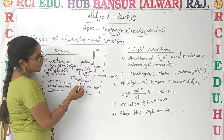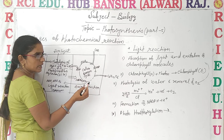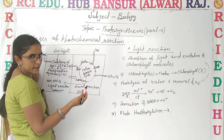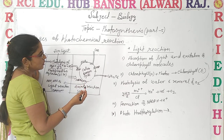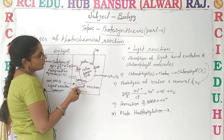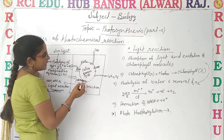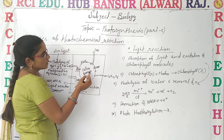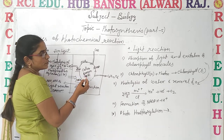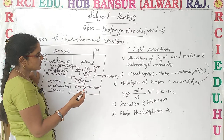That energy is later on used in the formation of ATP and NADPH. These ATP and NADPH are utilized in the dark reaction, because dark reaction does not need light. It utilizes the energy generated during the light reaction — ATP and NADPH are used during the Calvin-Benson cycle, which we will discuss later in detail.